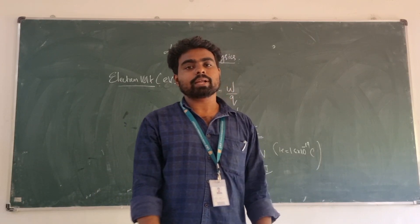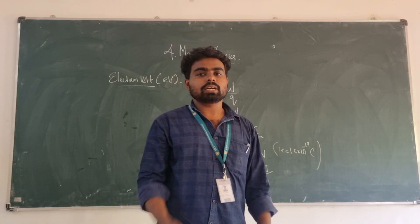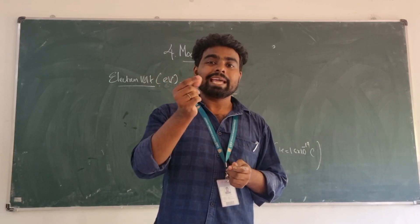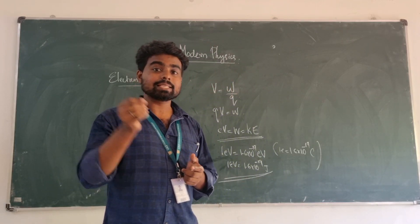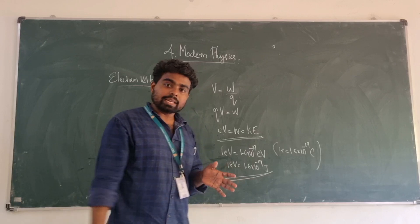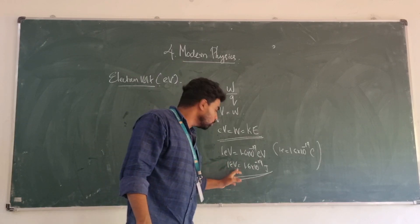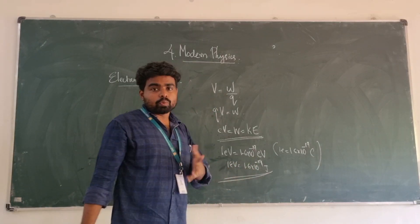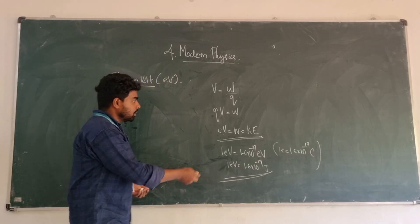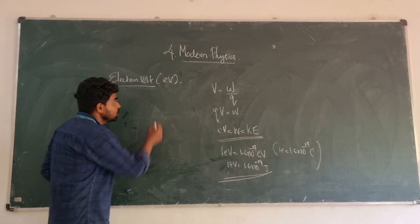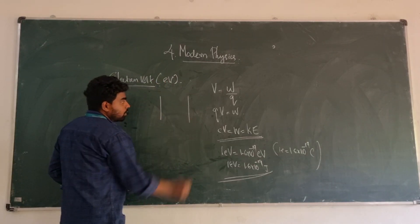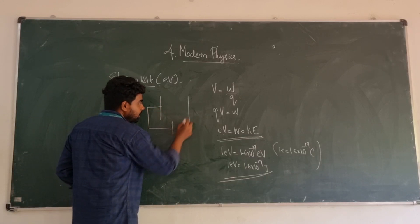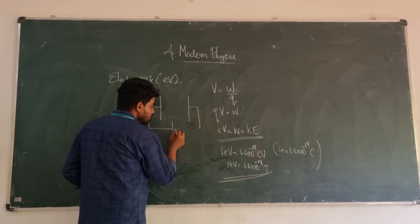We call this unit the joule — the energy will be expressed in joules. In atomic physics and nuclear physics, the energy of molecules will be expressed in electron volts. So one electron volt is the unit of energy used in atomic and nuclear physics contexts.